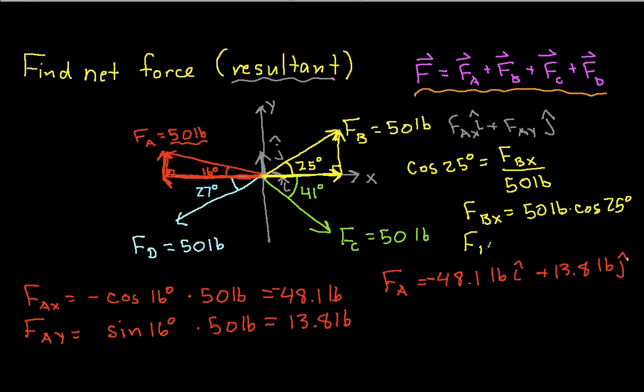And then FBy, basically in the same way, the sine of 25 degrees is FBy over 50 pounds. We solve that for FBy and we get 50 pounds times sine 25 degrees. I'm sorry I missed putting the vector on FA because since I'm taking magnitudes of the x component multiplying it by the unit vector in the x direction, magnitude of the y component multiplying it by the unit vector in the y direction, this is indeed a vector and not a magnitude. We can say that FB is, working these two guys out, I won't actually type in the numbers but you can check me, we have 45.3 pounds times i hat plus 21.1 pounds times j hat.